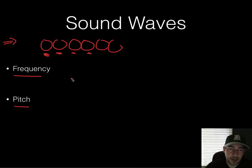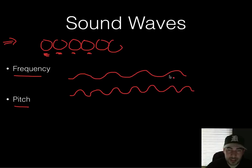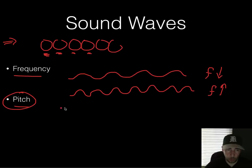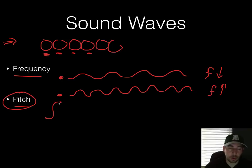Pitch is based on how frequently the sound wave goes by — not how loud it is. If you have two waves at about the same height, one with a higher frequency and one with a lower frequency, the higher frequency one has more waves passing by per second — that's the higher pitch — and the lower frequency one passes by less often — that's the lower pitch.